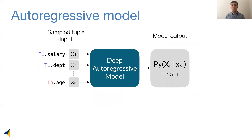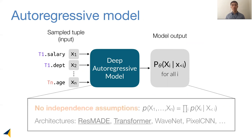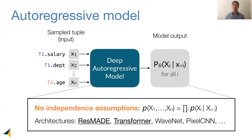The output of the model is a list of conditional distributions over all the columns. By multiplying them together, we can recover the original n-dimensional full join distribution. This is the secret ingredient that allows us to remove the independence assumptions.